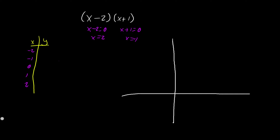So we know that when x = 2, y = 0, and when x = -1, y = 0. We can automatically get two points just from the factored form. Those two solutions are x = -1 and x = 2. Now we can find the vertex x-coordinate using the two solutions: (-1 + 2) / 2 = 1/2. So the vertex is going to be at x = 1/2.